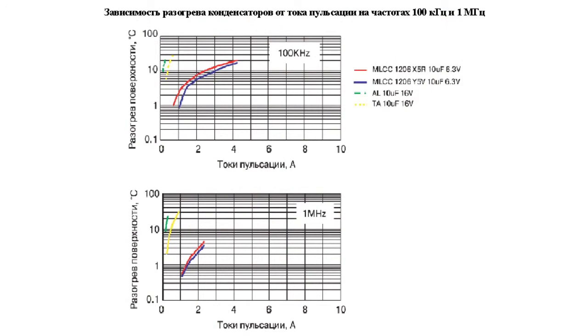Low equivalent series resistance and, because of that, low losses allow for higher loads in ceramic capacitors, despite their smaller dimensions than electrolytic capacitors, without causing a critical level of heating. Another advantage of their smaller size is their ability to bear short-time overload voltages many times higher than rated values.